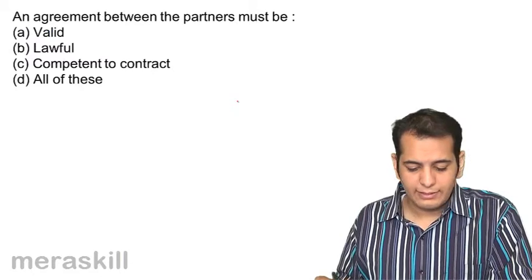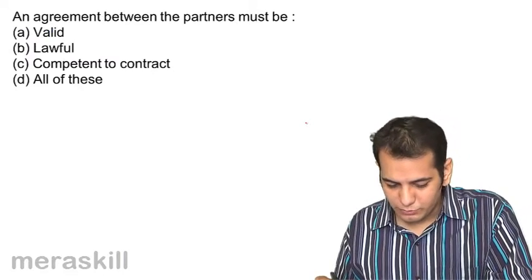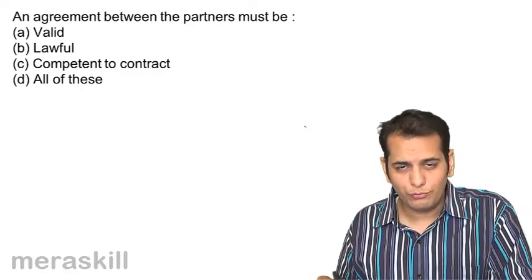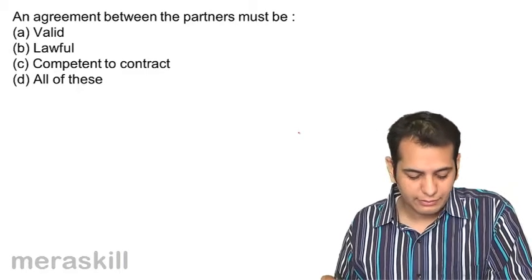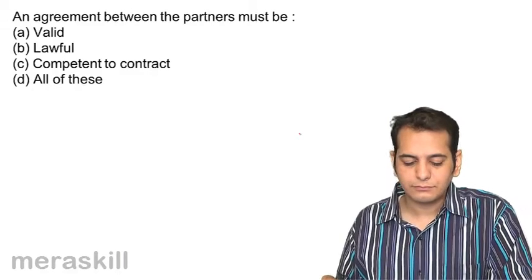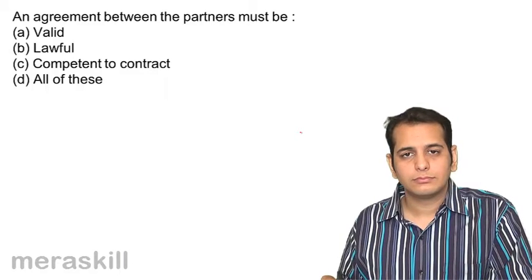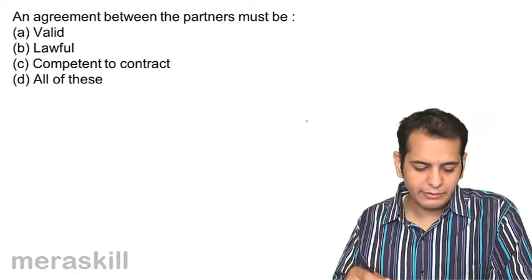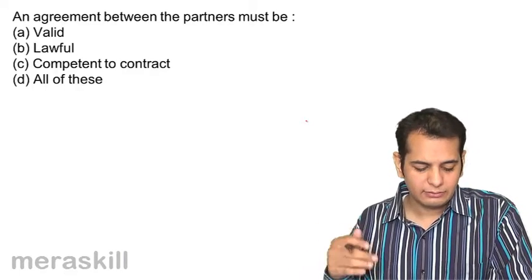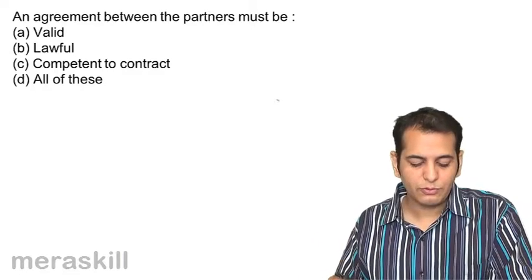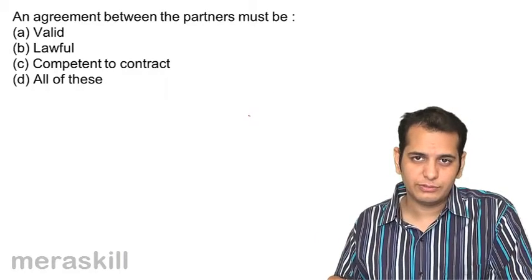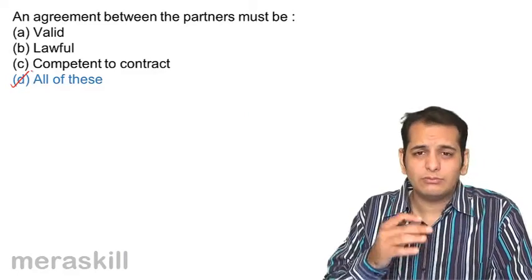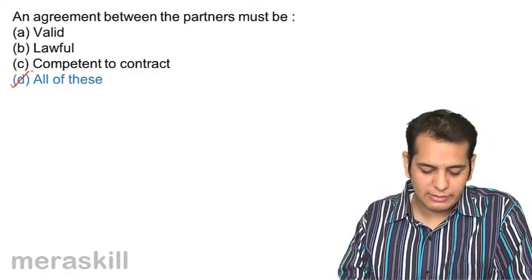Next question: an agreement between the partners must be: a) valid, b) lawful, c) competent to contract, or d) all of these. The answer is all of these — the agreement between the parties should be valid, lawful, and the parties must be competent to contract.